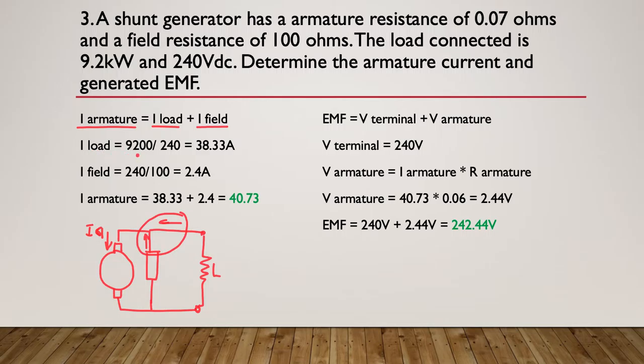So those two added together have to end up being this current here through the armature. Our I load is simply our 9.2 kilowatts divided by our 240, giving me 38.33 amperes. I can work out the current in the field, because again, it's got 240 volts. They tell us it was 100 ohms. So we know that the field here was 100 ohms, and that gives me 2.4. I add the two of them together and I get an answer of 40.73 amps.